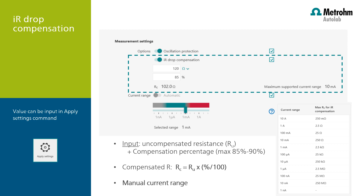The simplest way to use the uncompensated resistance is if you already know the resistance which you would like to compensate for. You can fill the resistance value in the INTELLO software in the Apply Settings command, and specify how much of this value you want to compensate — in this example on this slide it is 85%. Don't go beyond 95% because the potential could run into oscillation, so it is not possible to compensate for 100%. In this case, INTELLO will tell you which resistance — 102 ohm — it will use to compensate.